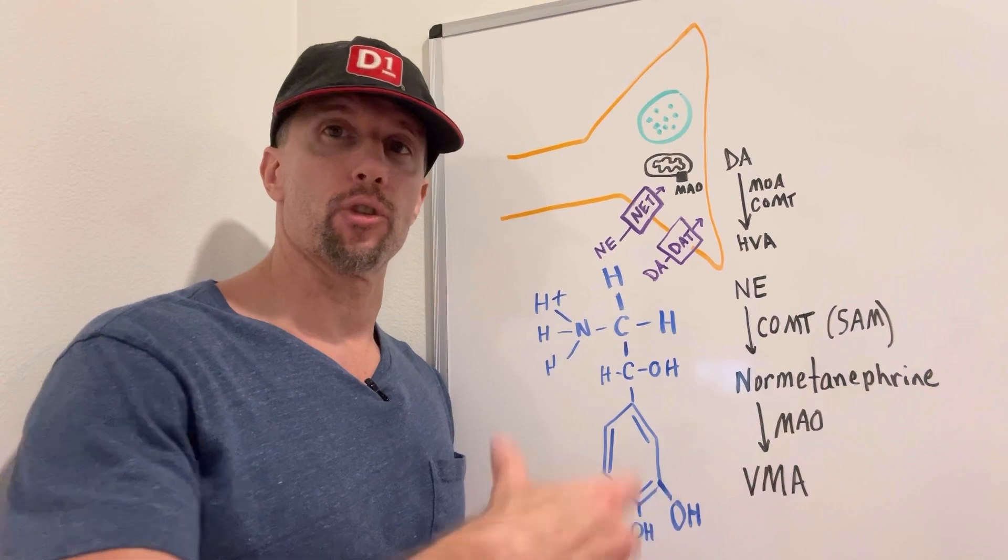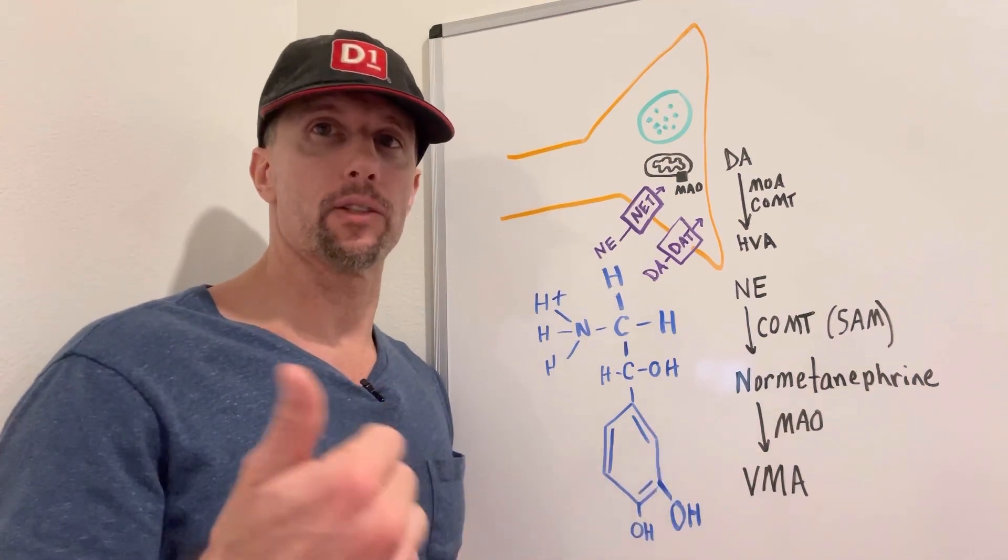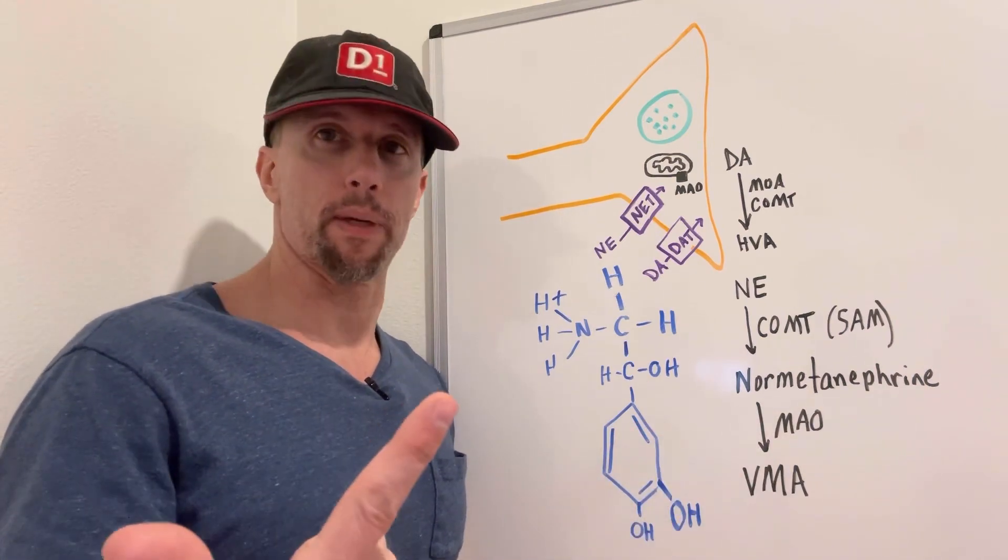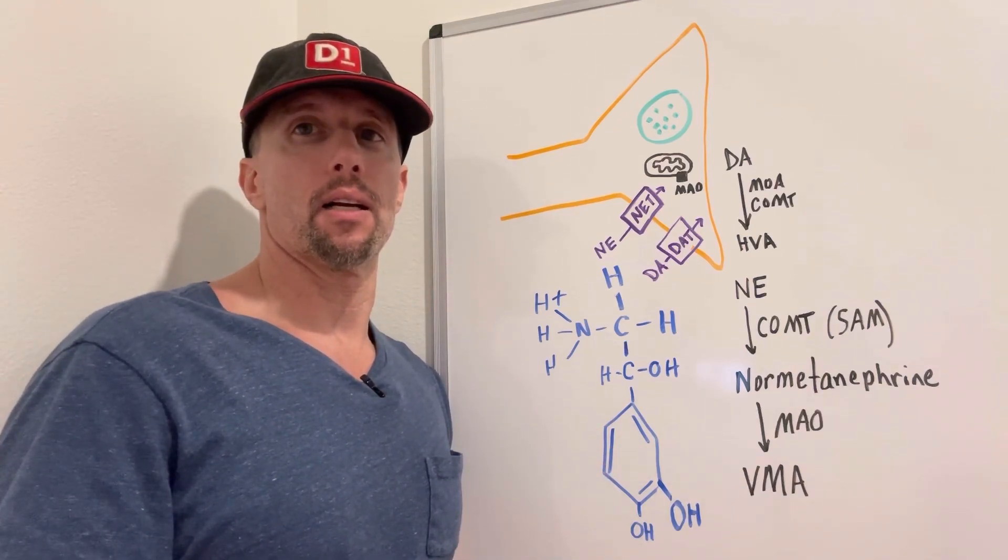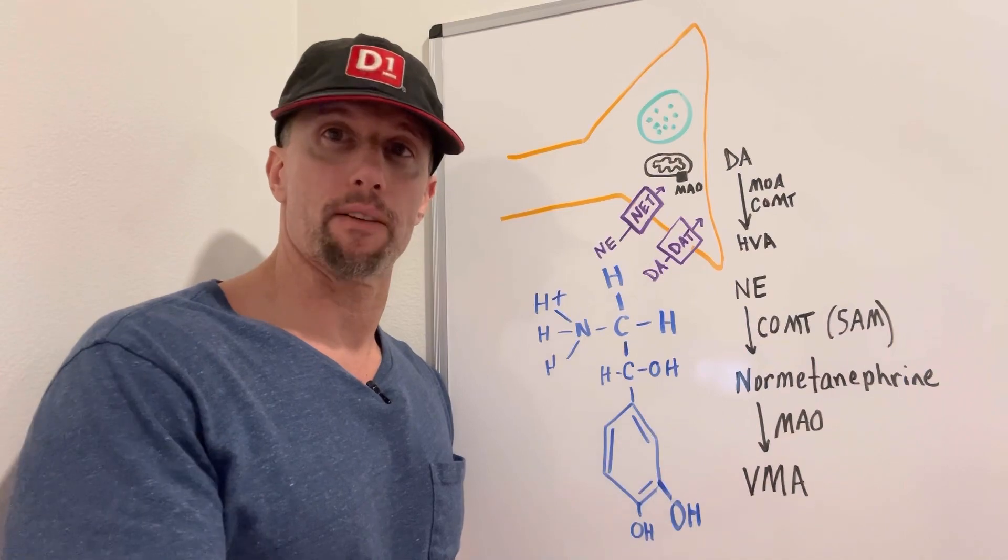So after the catecholamine is released, and remember, catecholamines are norepinephrine, dopamine, two neurotransmitters, and then epinephrine, which is a hormone, they're going to be broken down eventually.